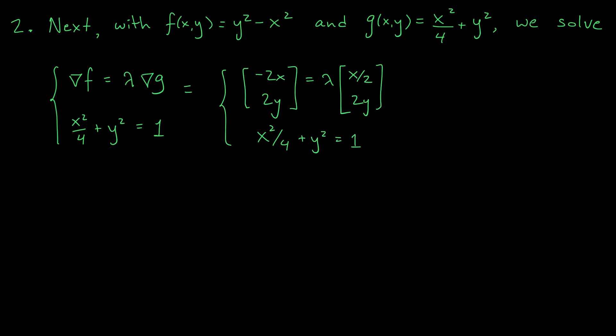Okay, now if you unpack this vector equation, what we're really trying to solve here is this system of equations. Minus 2x equals lambda times x over 2, 2y equals lambda times 2y, and finally, x squared over 4 plus y squared equals 1. Maybe we'll label these equations as equation 1, equation 2, and equation 3.